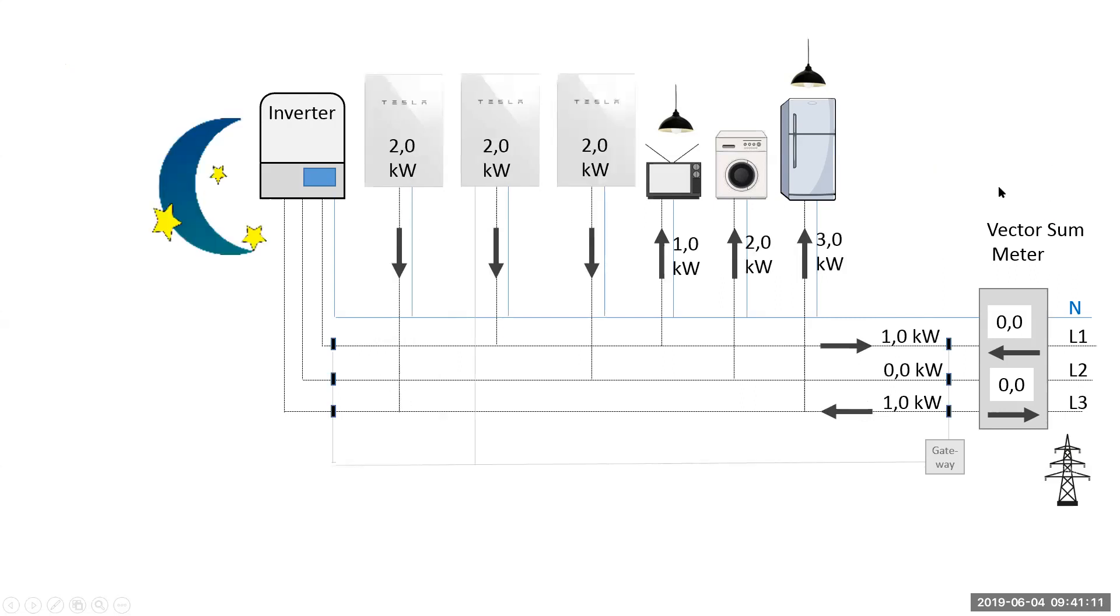So just to fly through, exactly the same we have three batteries, one on each of the phases. Same situation applies that we're trying to have three, four, five, six kilowatts here.